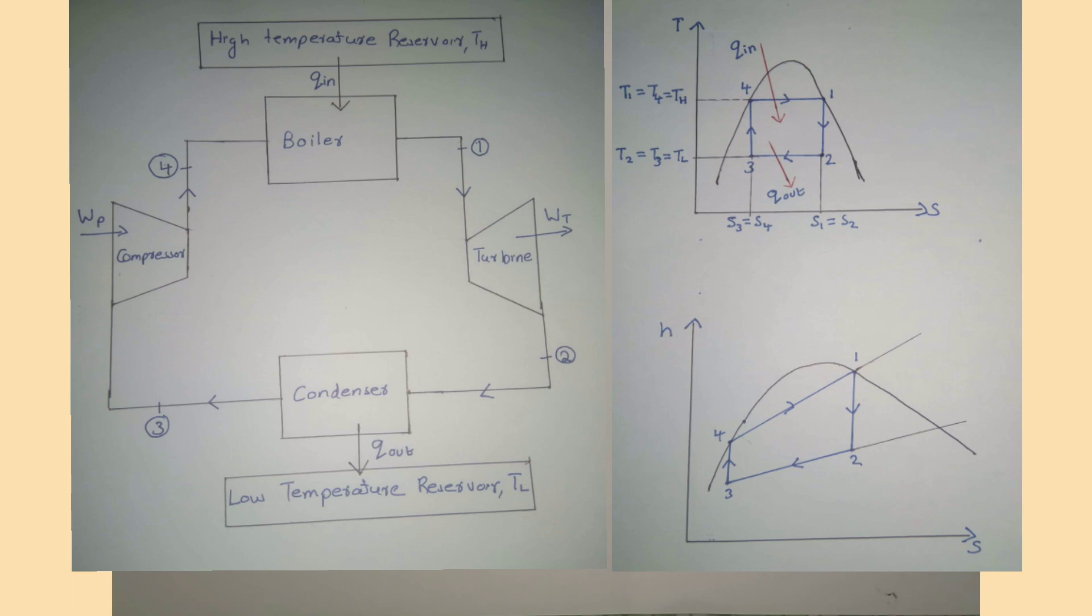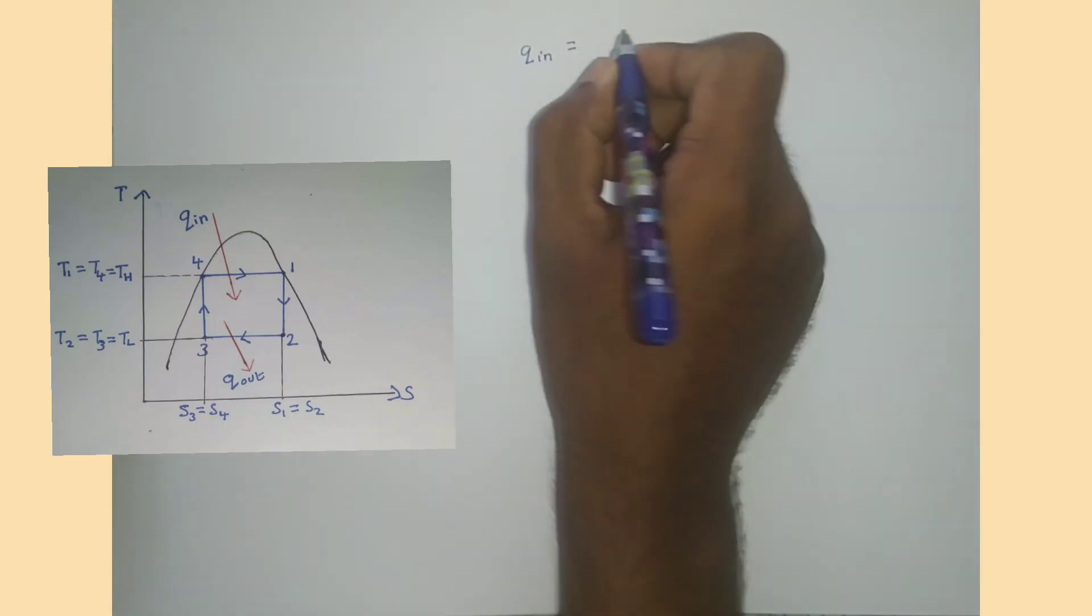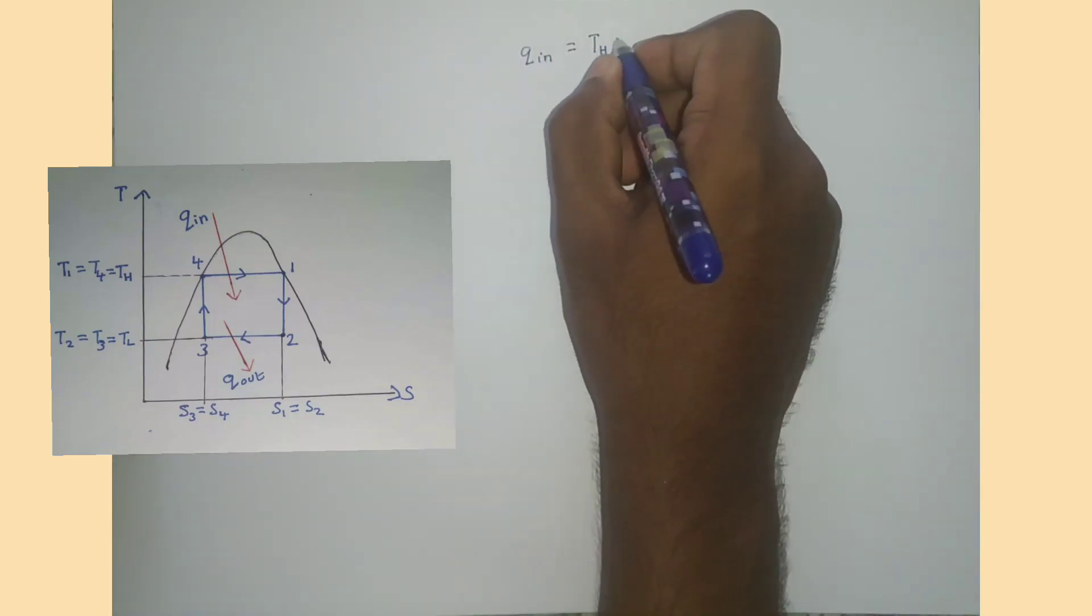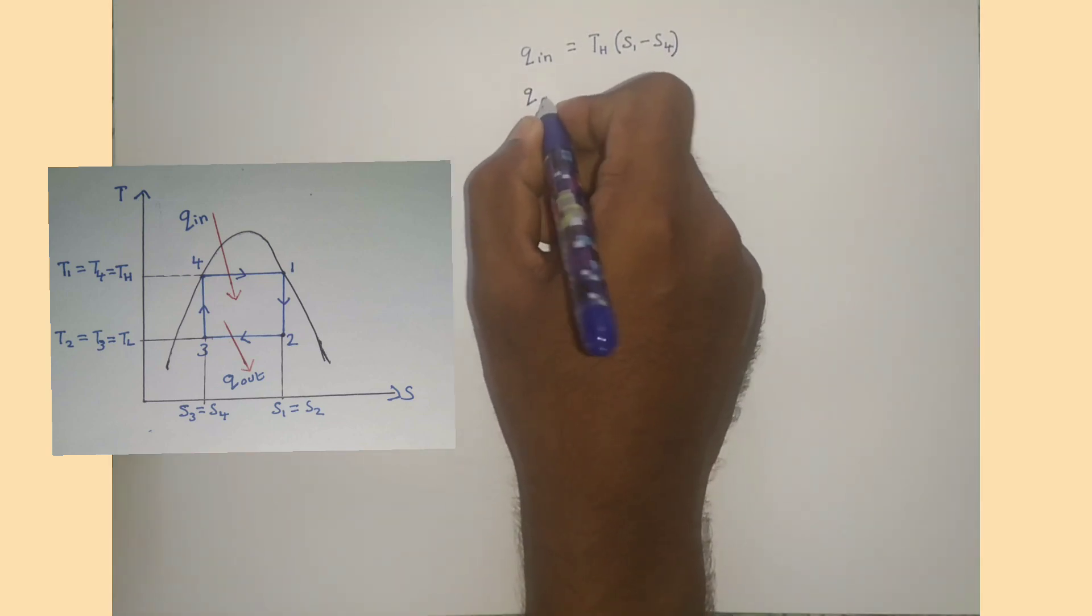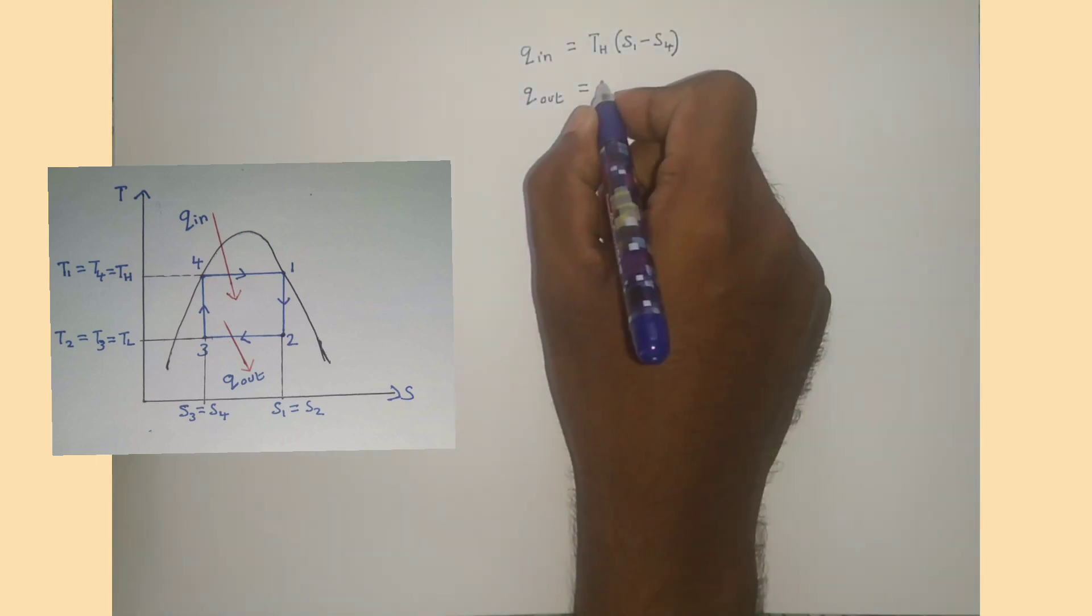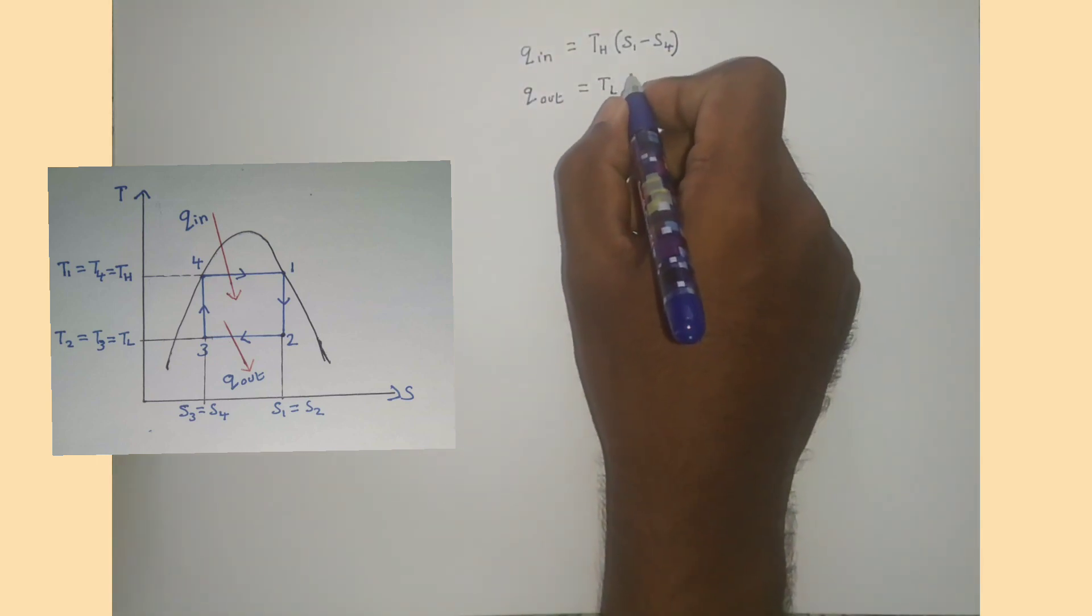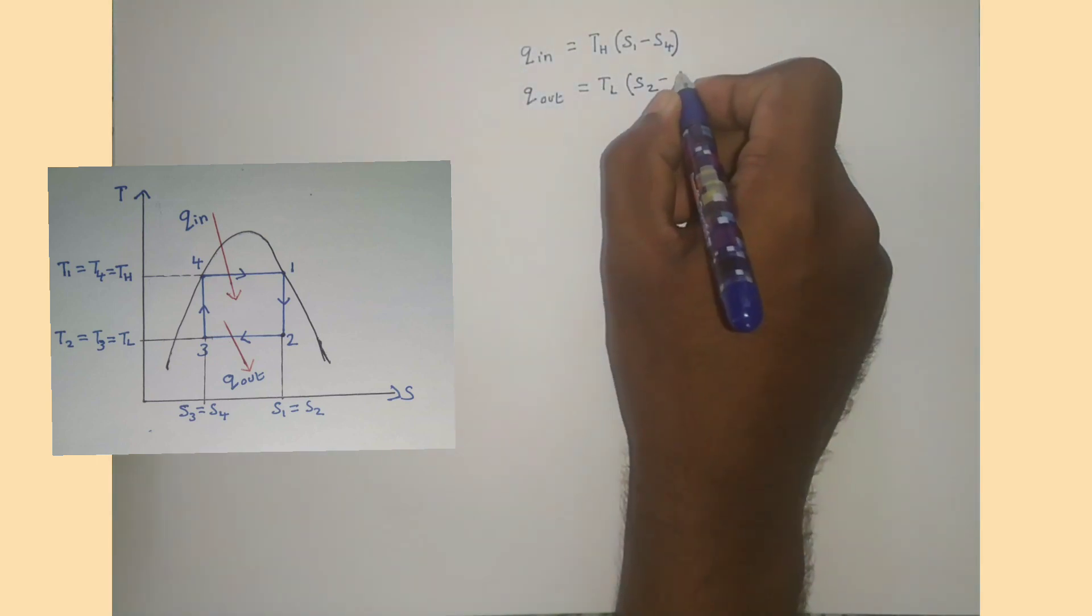Now we can find an expression for the efficiency of the Carnot cycle. From the TS diagram, heat input Q in equals TH times (S1 minus S4), and heat rejected Q out equals TL times (S2 minus S3).